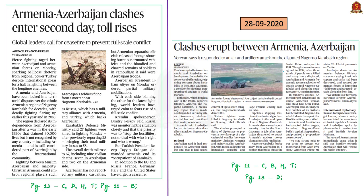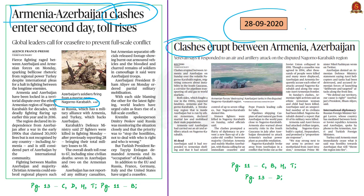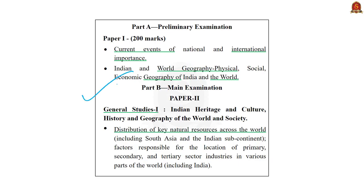The next news article is about the recent clashes happening between Armenia and Azerbaijan in the region called Nagorno-Karabakh. Let us discuss in detail the geography and strategic importance of this region, as well as the background behind this particular conflict. The syllabus relevant for this analysis is highlighted here for your reference.